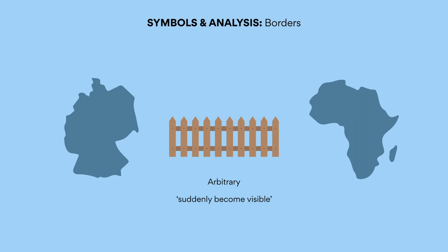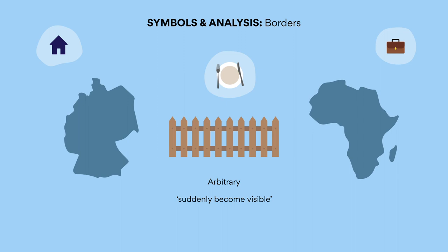Borders. Throughout the novel, there's a sense that borders between countries are somewhat arbitrary things — they can suddenly become visible and just as easily disappear. Sometimes they're easy to cross; sometimes they're impossible to cross. Sometimes it's easy physically, but harder in other ways. Once you cross a border, you need housing, food, employment, and so forth.